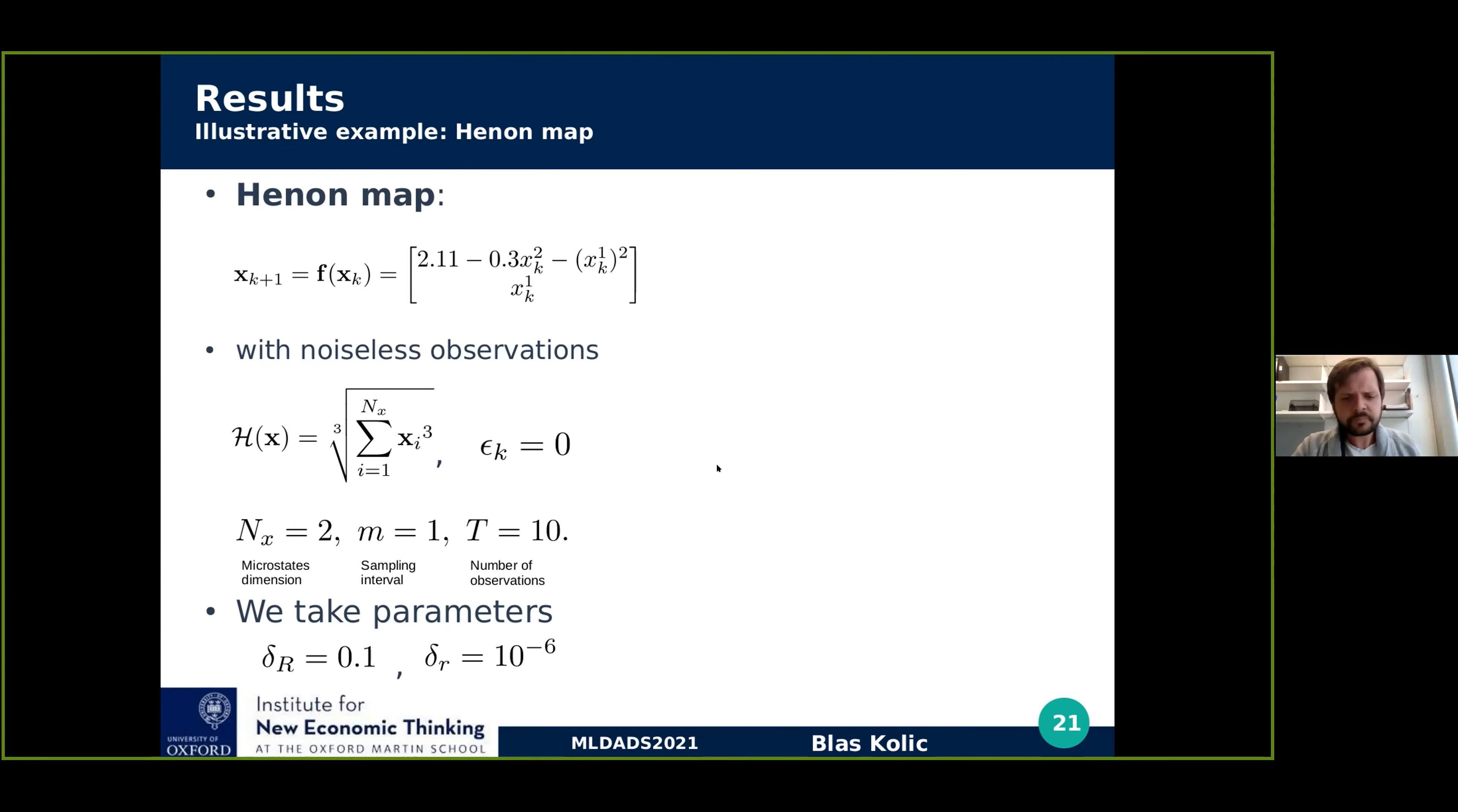So it looks more or less like this. Here in the top, you can see the microstate space with the Henon attractor. And this point here is going to be the ground truth microstates, which generates this time series over here. So what we're going to do here, we don't need preprocessing because there's no noise in the data.